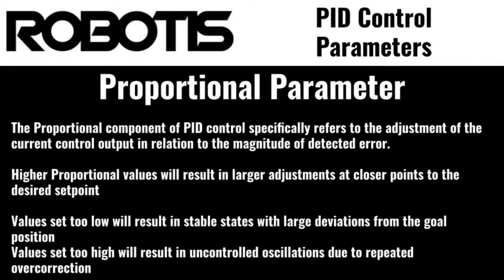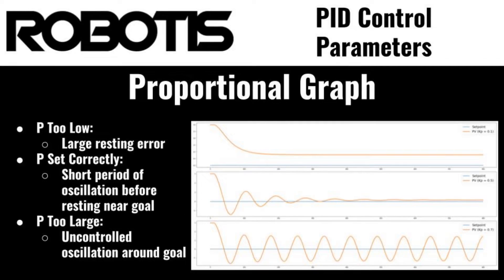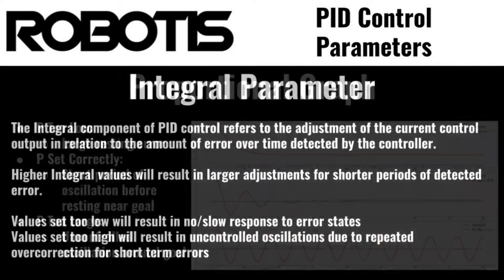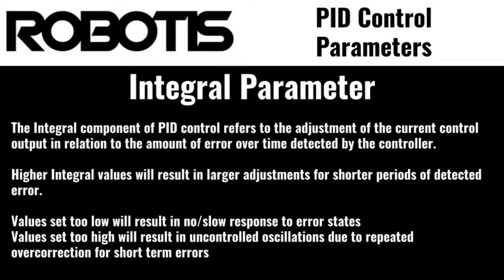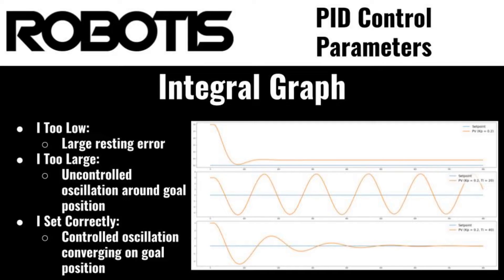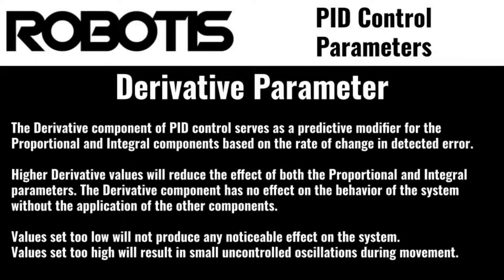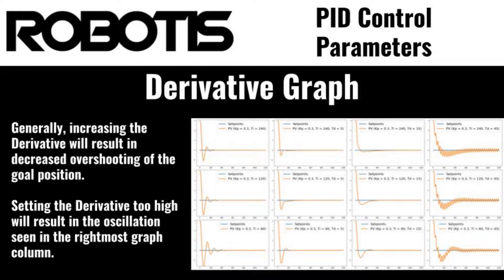First is the P or proportional gain. This can easily be thought of as a way to specify the aggressiveness of the actuator in seeking its goal position. The second parameter is I or integral gain, which sets the servo's adjustment behavior to correct for errors over time — higher I gain corresponds to more aggressive adjustments over shorter times. Third is the D or derivative gain, which dampens or smooths out the application of the previous two values, allowing for finer-tuned adjustments when used alongside the other parameters.